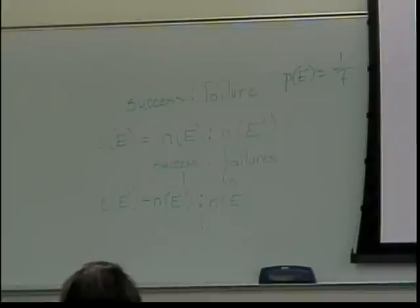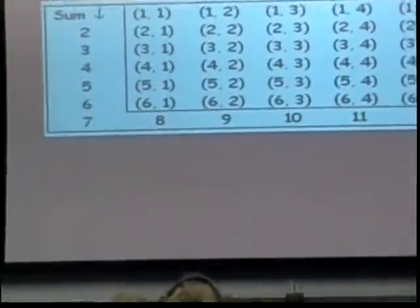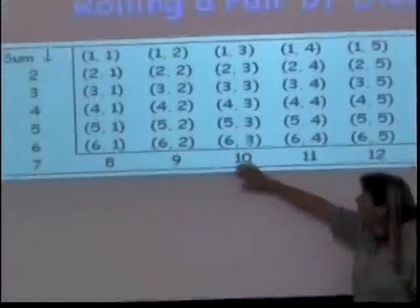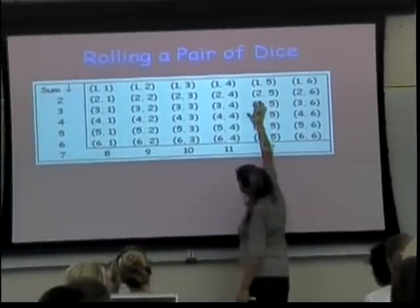The way you should be reading it is the diagonals tell you how many ways you can get a 12, an 11, a 10, a 9, and so on.